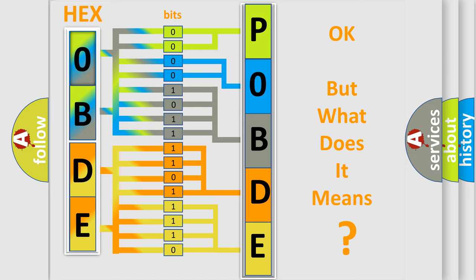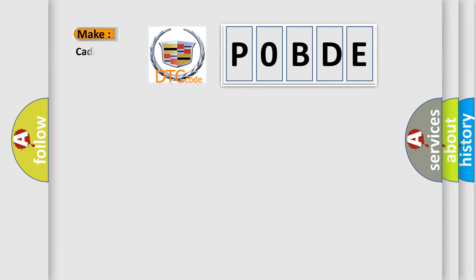The number itself doesn't make sense to us if we cannot assign information about what it actually expresses. So, what does the Diagnostic Trouble Code P0BDE interpret specifically for Cadillac car manufacturers?